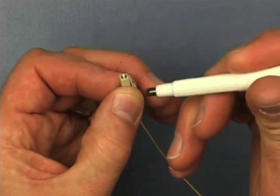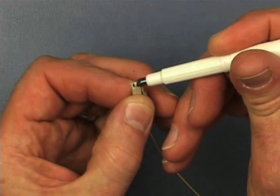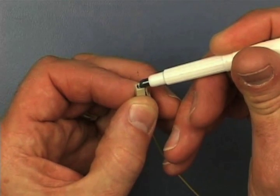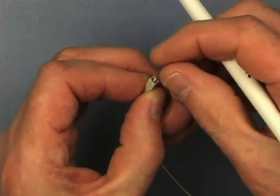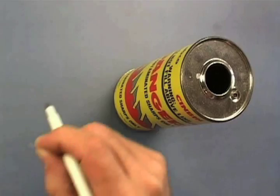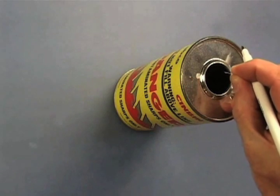Score the fiber close to the ferrule using a single stroke of the cleaving tool. Remove the fiber by gently pulling away from the tip. Place the fiber scrap into a sharps bin.